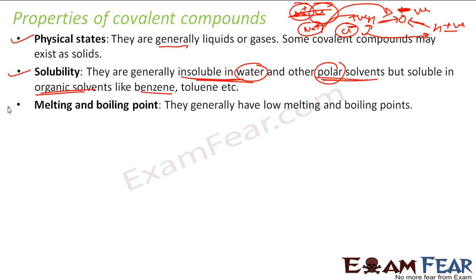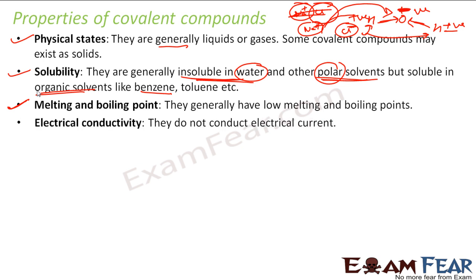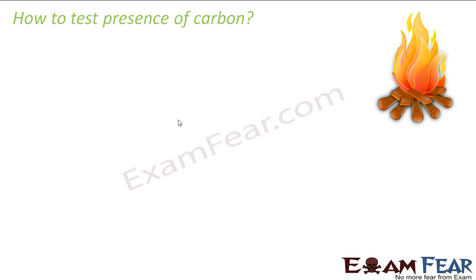Covalent compounds generally have low melting and boiling points because the covalent bond is weaker than the ionic bond. They also generally do not conduct electricity.